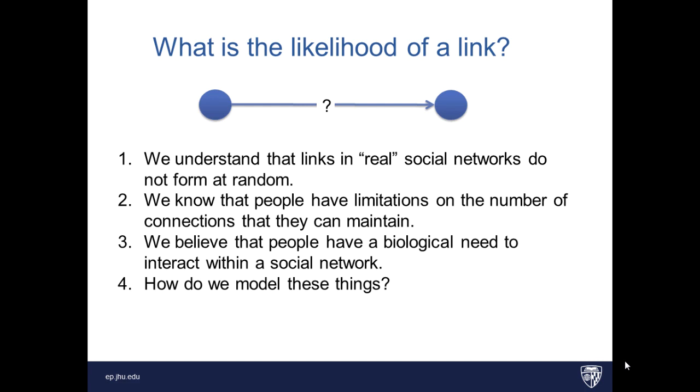We also know that people have limitations on the number of connections they can maintain. So we have this from the Dunbar number, which I think we've discussed previously. And you know that if you're Google or Yahoo, you can have millions of links. If you're Kim Kardashian and on Twitter, you can have millions of links because that's not a real relationship. There's nothing that's required to maintain that relationship. So when we talk about a real social network of people that are interacting, there all of a sudden becomes constraints on time, on energy, on a lot of things that limit how many people you can have.